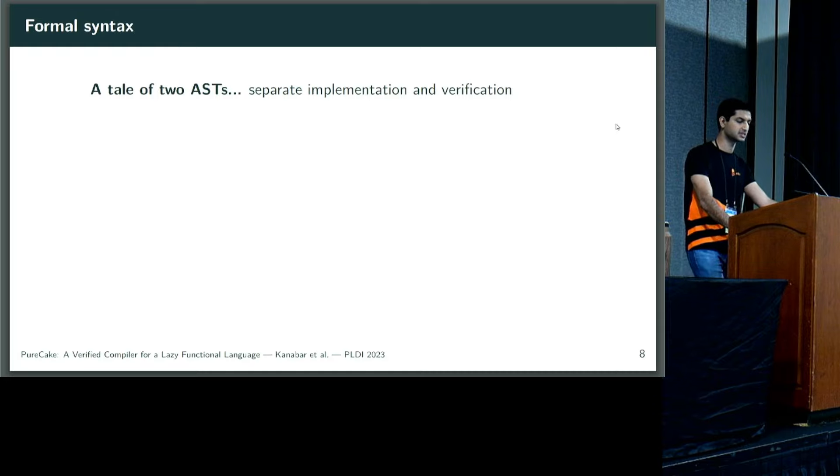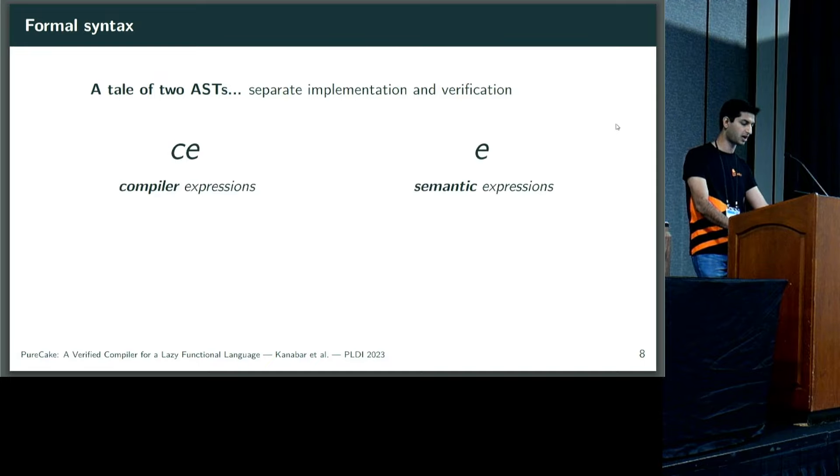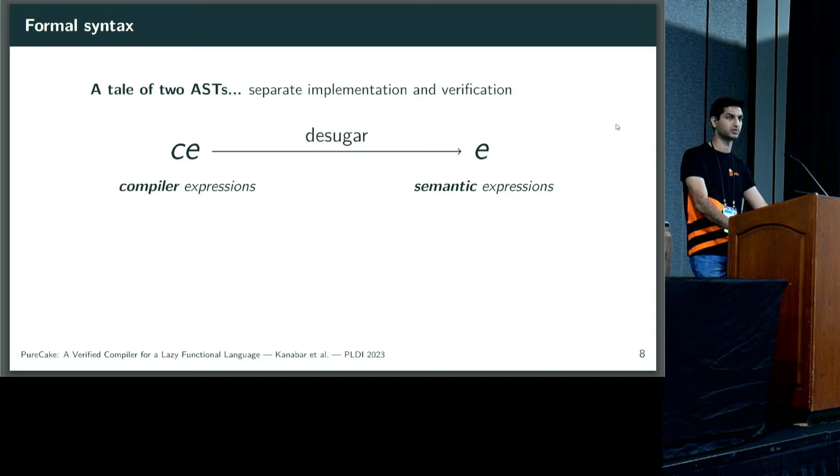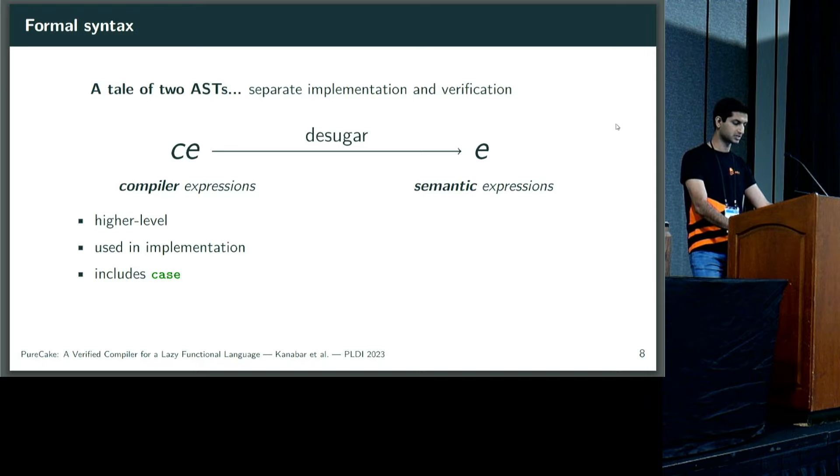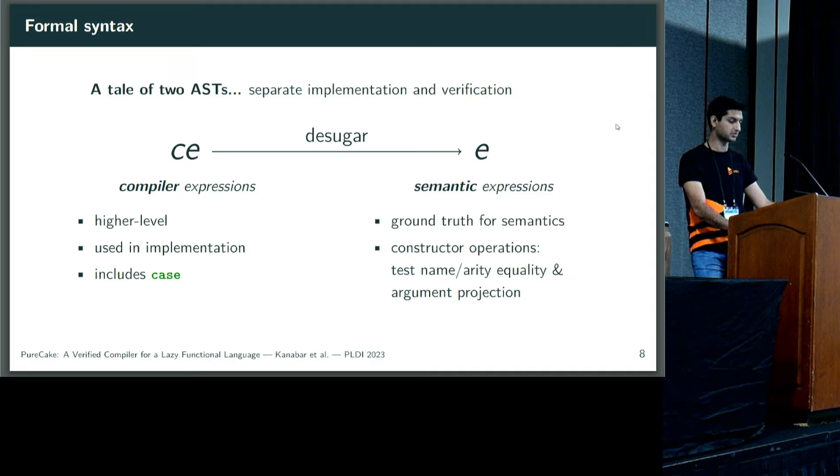Formally, we specify the syntax using two ASTs, allowing us to separate our implementation and verification. We consider compiler expressions, CE, and semantic expressions, E. Compiler expressions are a higher level syntactic sugar for semantic expressions. They'll de-sugar to them. It's most convenient to phrase our compiler over compiler expressions, so these are the ones we use in implementation. They include constructs like case. In contrast, it's most convenient to phrase our semantics over semantic expressions, so these will provide the ground truth for our semantics. And we de-sugar case expressions into more primitive constructor operations, such as testing for name and arity, and projecting out arguments.